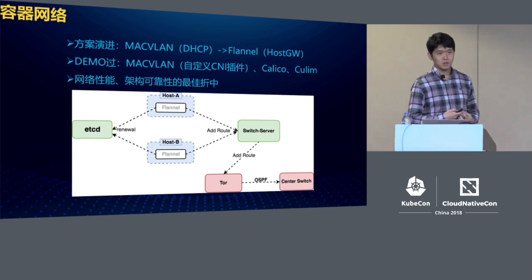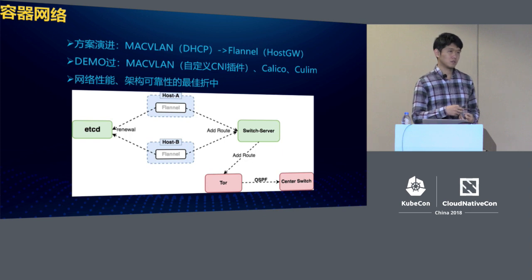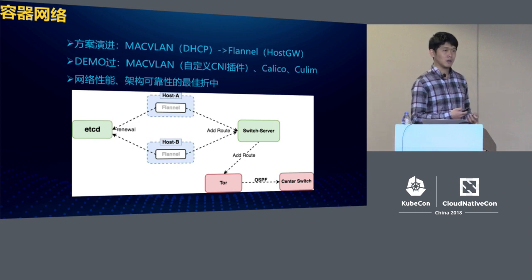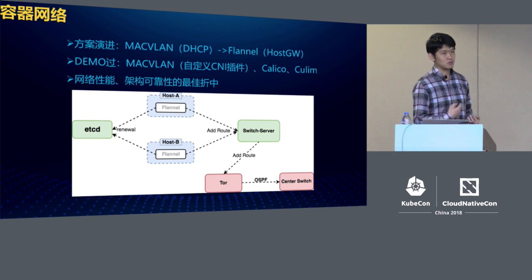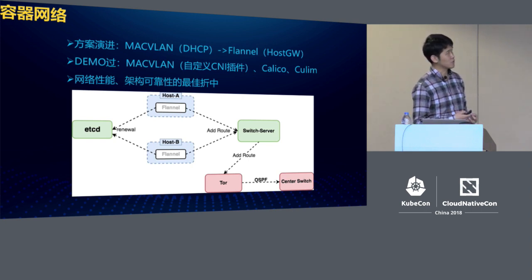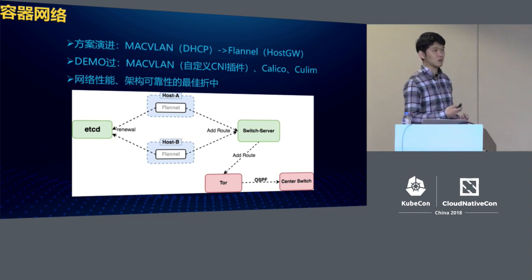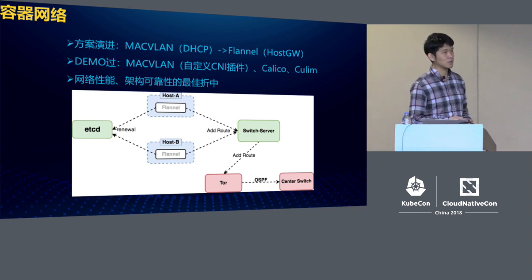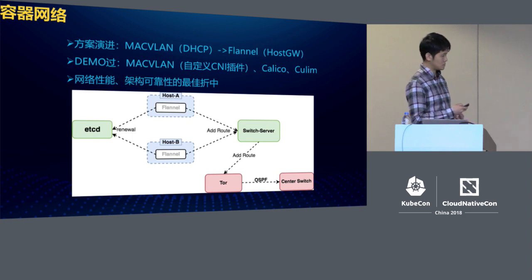At the end, we chose Flannel. We use Flannel host-gateway and a VPC model. The theory behind these platforms is almost the same — we preset IPs and allocate IP routes to specific switch servers and then to a VPC gateway. Through this way, we can get all container networks connected, so the container network and physical network can coexist on one platform and be optimized.